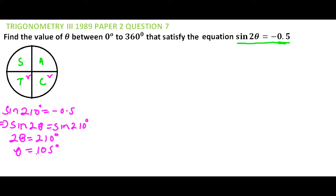That is the first value that satisfies our equation. In the fourth quadrant, the angle 330 has sine of 330 equal to -0.5. Therefore sin 2θ is the same as sin 330°, so 2θ = 330° and θ = 165 degrees.